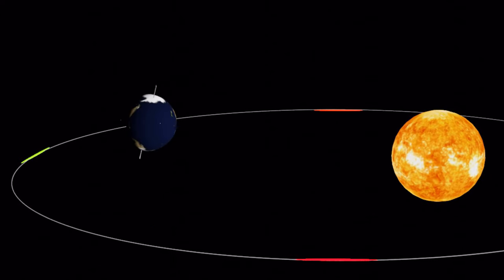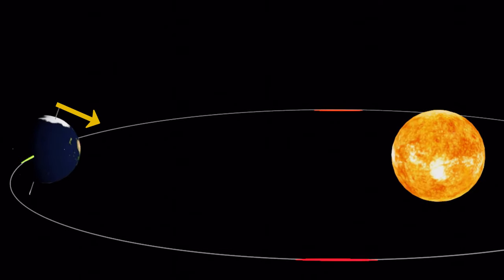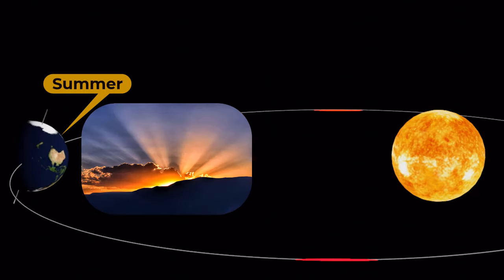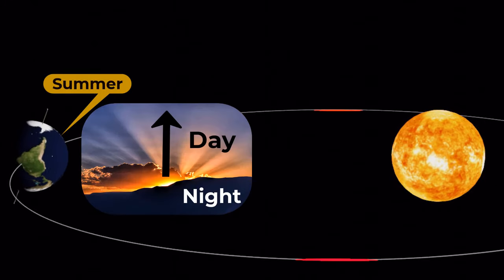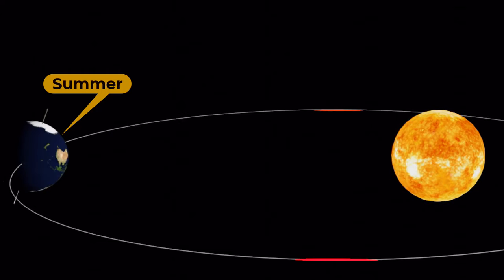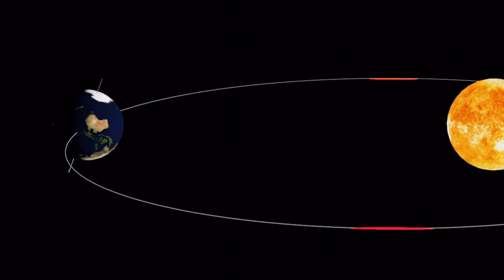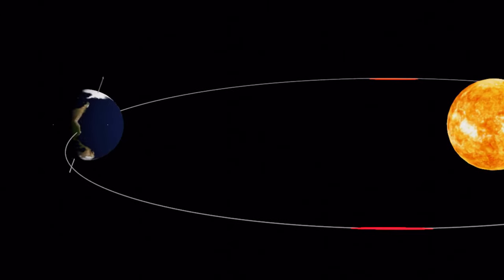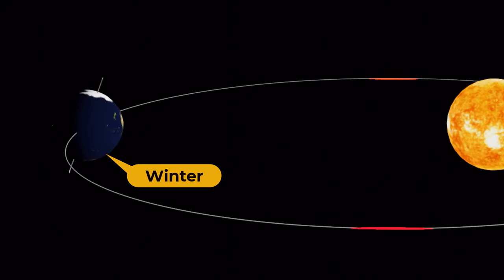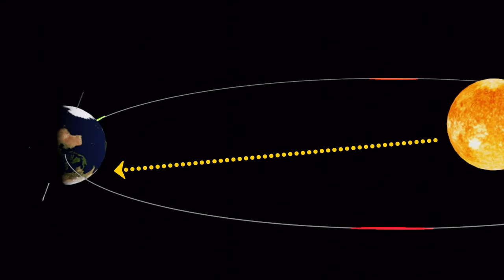As the Earth moves farther from the Sun in its orbit, the Northern Hemisphere reaches its maximum tilt towards the Sun, resulting in the summer season. This is the time when the days are the longest and the nights are the shortest, and the Northern Hemisphere receives the maximum amount of light. At the same time, the Southern Hemisphere reaches its maximum tilt away from the Sun, resulting in the winter season, receiving the minimum amount of light.